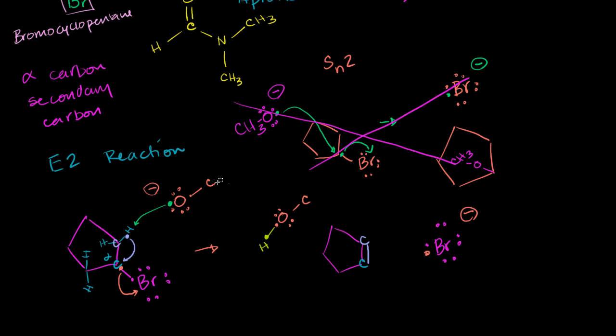So now instead of just being bonded to a methyl group, it's bonded to a carbon that's bonded to three methyl groups. So CH3, CH3, CH3, or you could call this a tert-butyl group, this whole thing over here. So that's a carbon bonded to a CH3, a CH3, and a CH3.